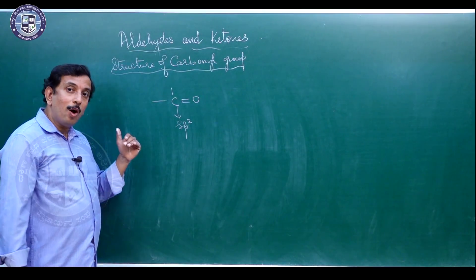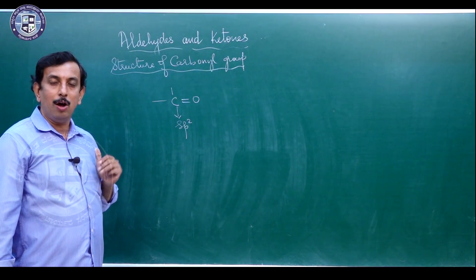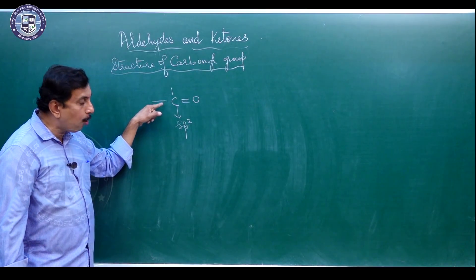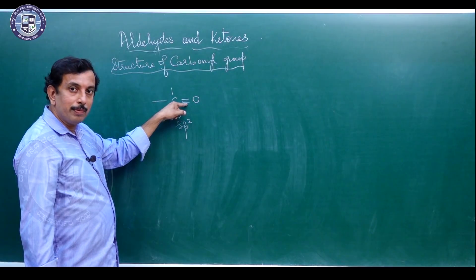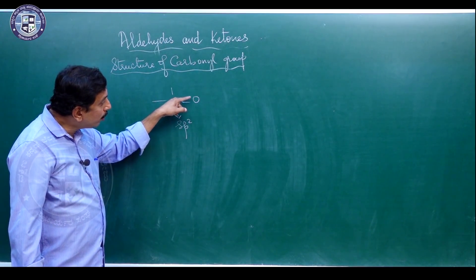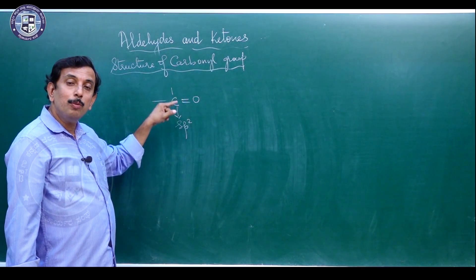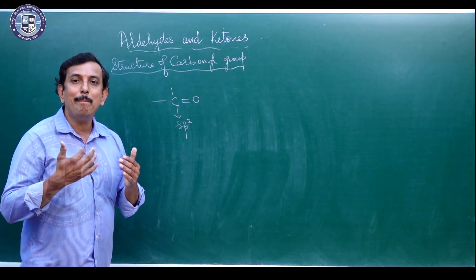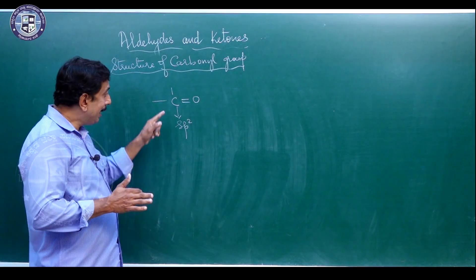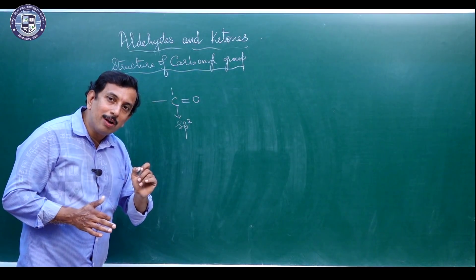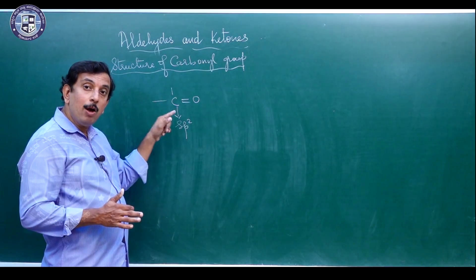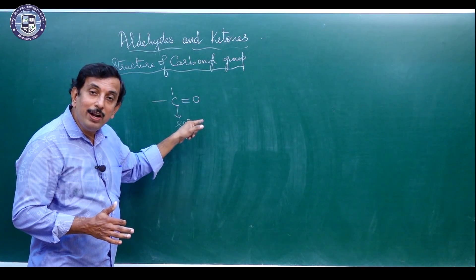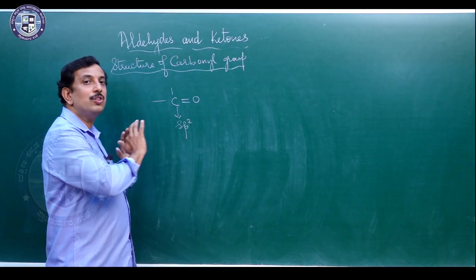Why SP2? Because carbon wants to form three sigma bonds around it, or get linked with three other groups. Therefore it uses SP2 hybrid state. In this SP2 hybrid state, three sigma bonds are already there, whereas the fourth bond is a pi bond, formed by sideways parallel overlap of the p orbital of carbon with the half-filled orbital of oxygen.